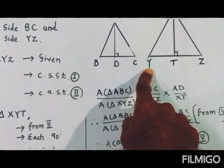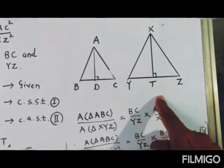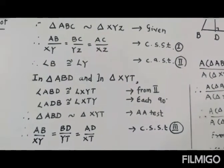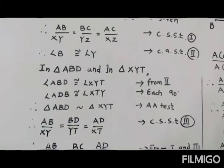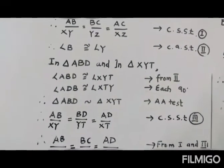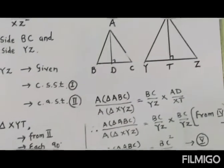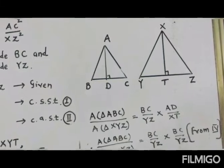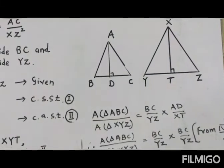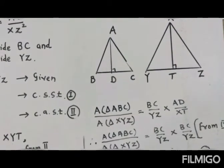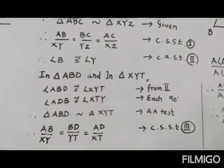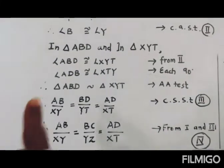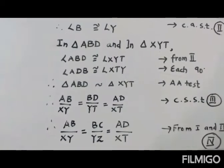AD is perpendicular here and XT is perpendicular — so the two sub-triangles are similar. We take triangles ABD and XYT. Angle D is congruent to angle T due to construction — both are 90 degrees. Angle B and angle Y are corresponding angles of similar triangles. So both triangles are similar by the Angle-Angle test.